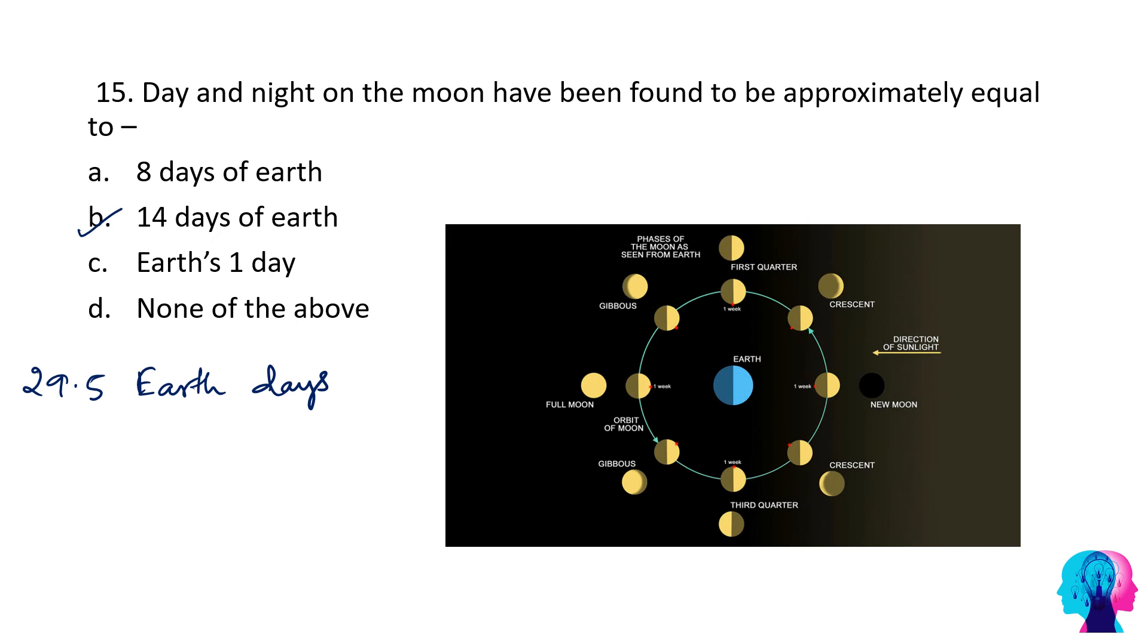This means that on every orbit, the moon gets a little over 2 weeks worth of daylight followed by an equal amount of night time. In other words, we can also say that almost any given span on the moon sees 2 weeks of continuous daylight followed by 2 weeks of continuous darkness.